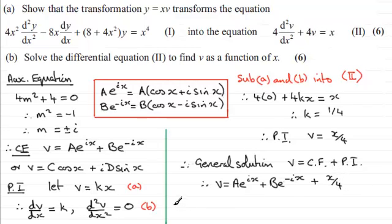Or we could give the other version, which was v equals the other complementary function, which was c cos x plus id sin x, and then plus the particular integral of x over 4.